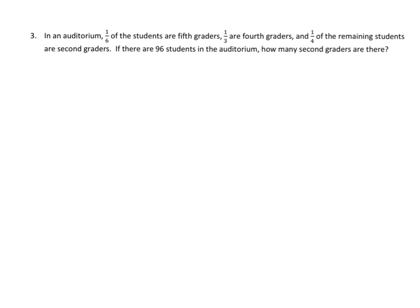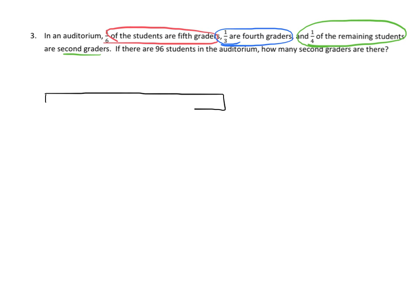Now for this problem: there's an auditorium where one-sixth of the students are fifth graders, one-third are fourth graders, and one-fourth of the remaining students are second graders. There are 96 students in the auditorium total. Let's draw the picture. This whole tape diagram represents all 96 students.